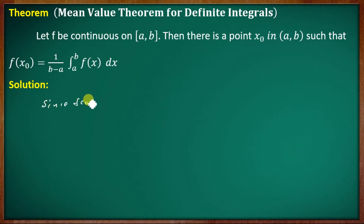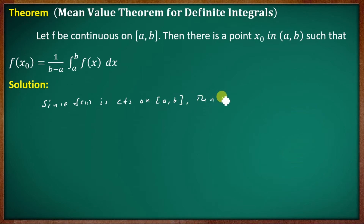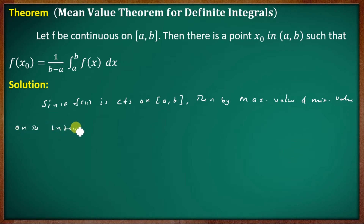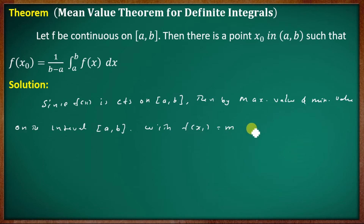Since f(x) is continuous on closed interval [a, b], by the maximum and minimum value theorem, f attains its maximum and minimum values on the interval. Let f(x₁) = m be the minimum value, and f(x₂) = M be the maximum value.